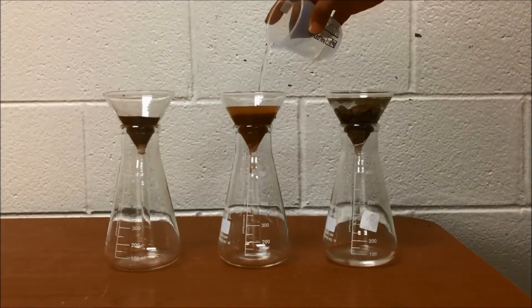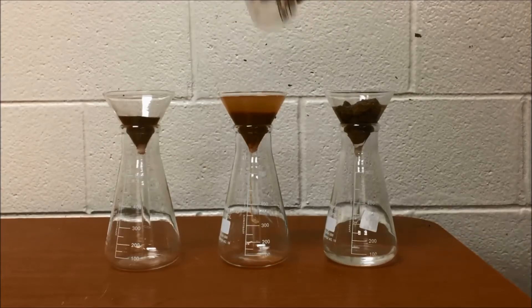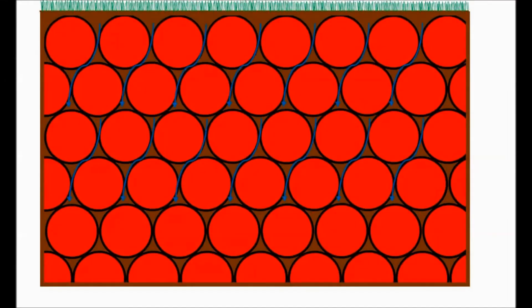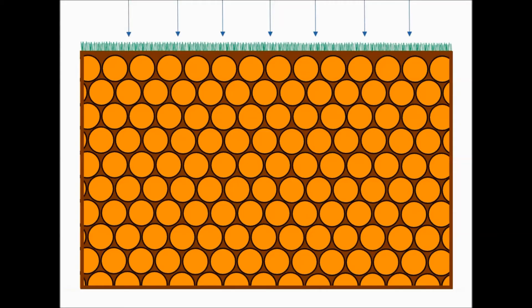We can see that water flows quickly through gravel. This is because gravel has large soil particles and hence higher permeability. When water is added to the sand, it takes more time to flow compared to gravel. This is because sand has smaller sized particles than gravel.